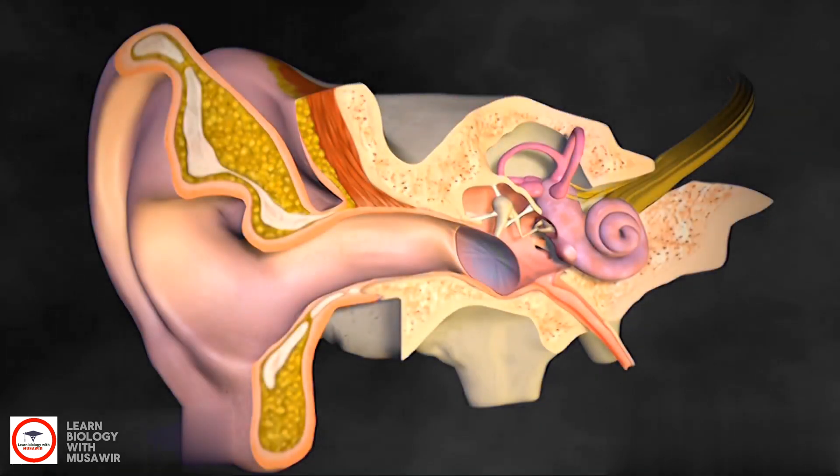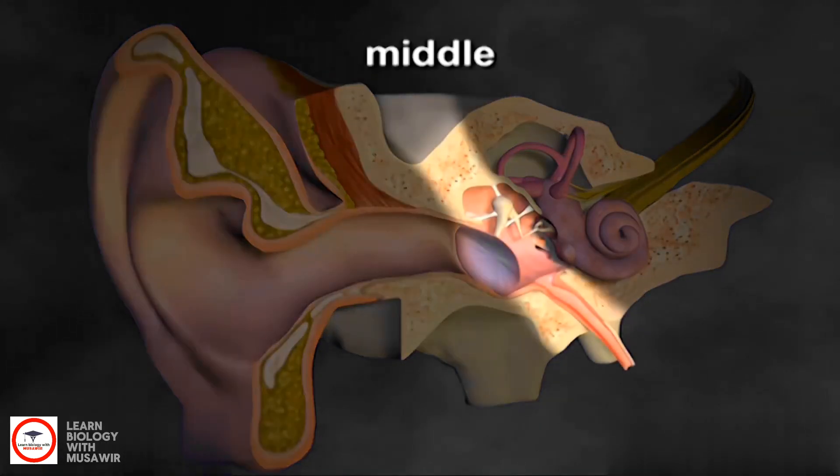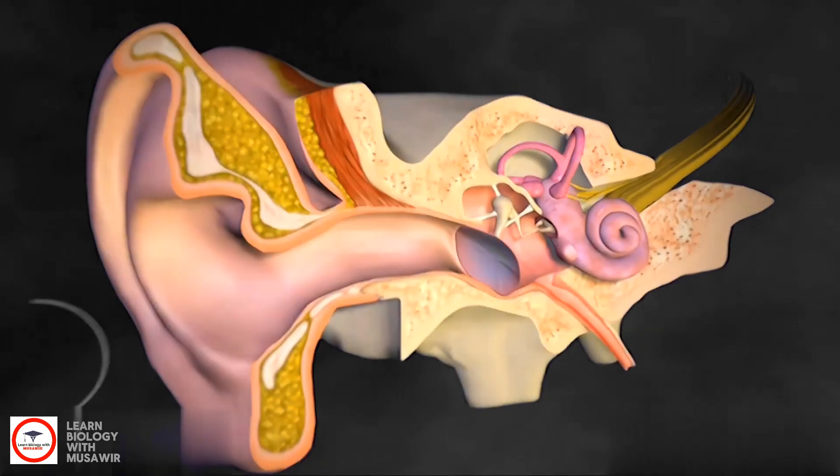The ear has three distinct parts: the outer, the middle, and the inner ear.